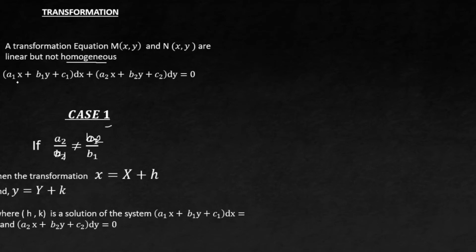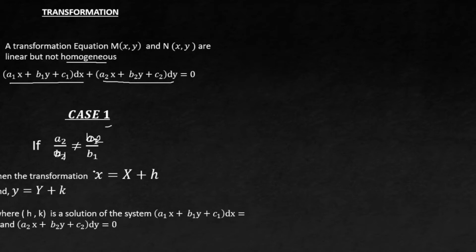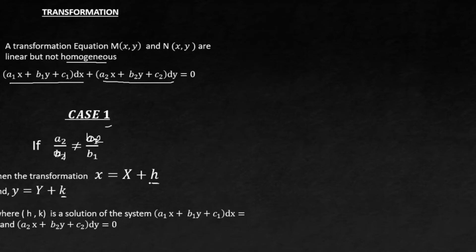With Case 1, you first take the expressions a1·s + b1·y + c1 and a2·s + b2·y + c2, and solve them simultaneously. You will understand the reason for this later. Solve them simultaneously to get the values of small s and small y. The answers you get form the coordinate (h, k), where h is the value for s and k is the value for y.